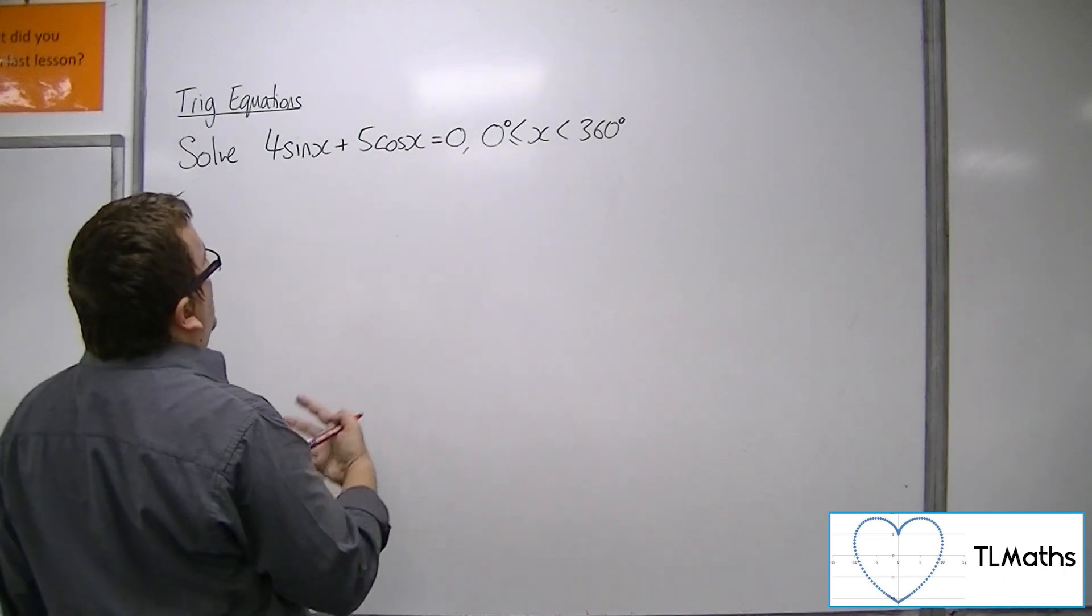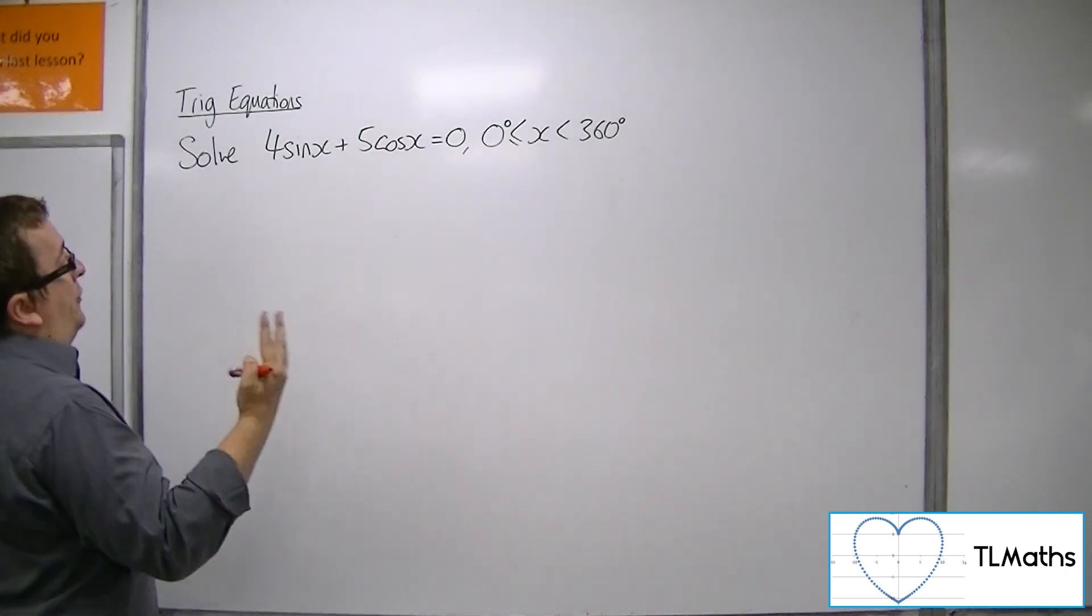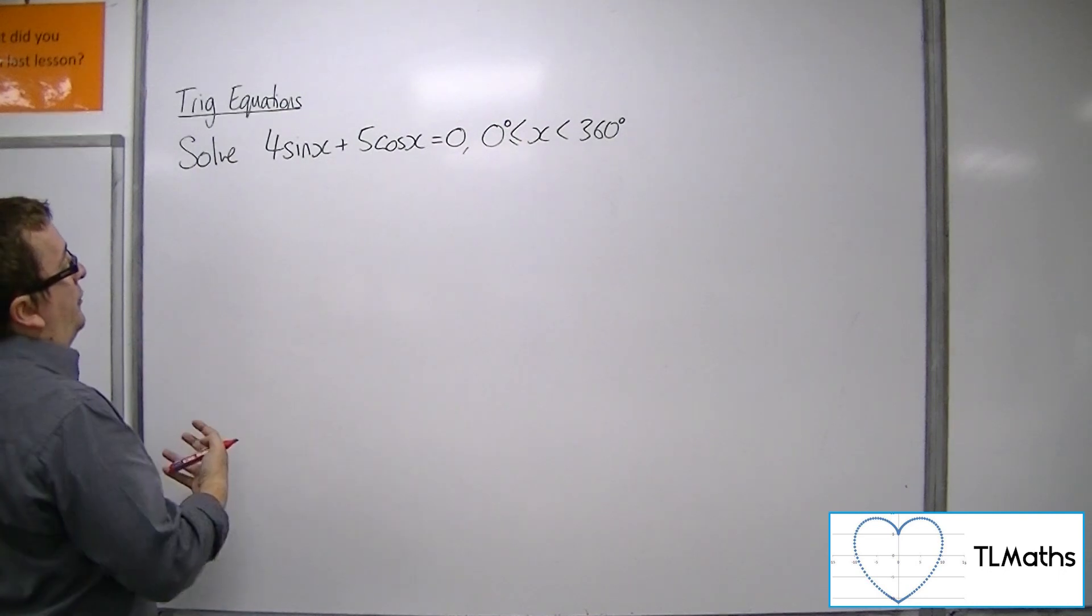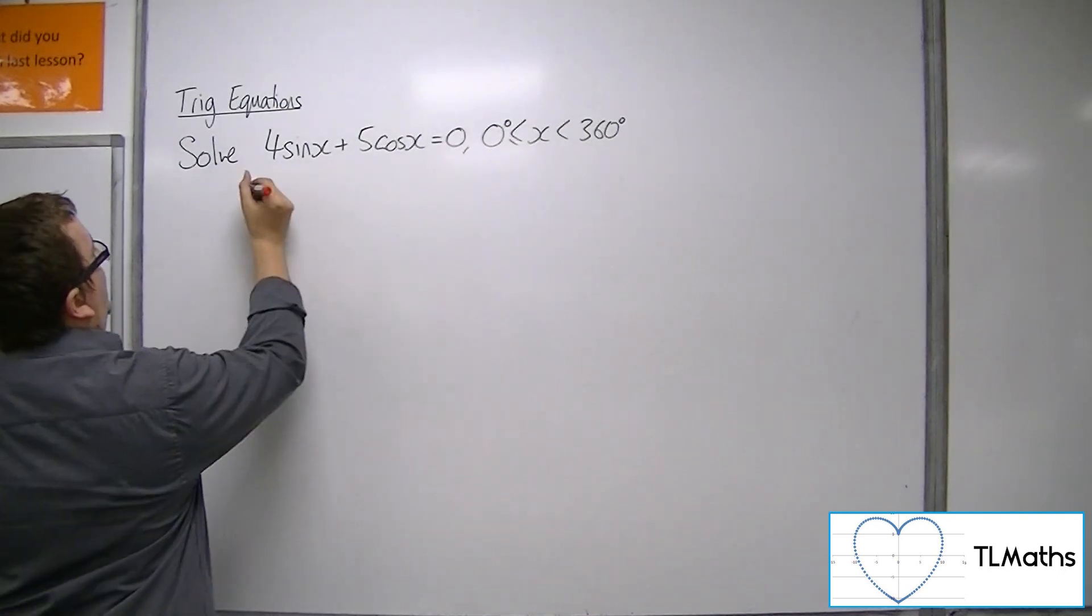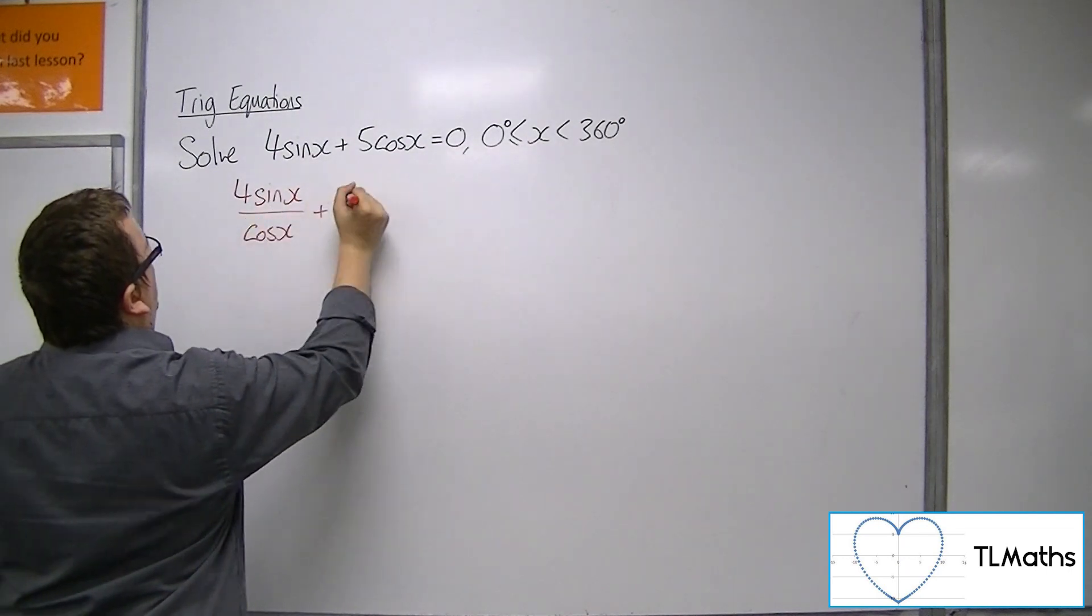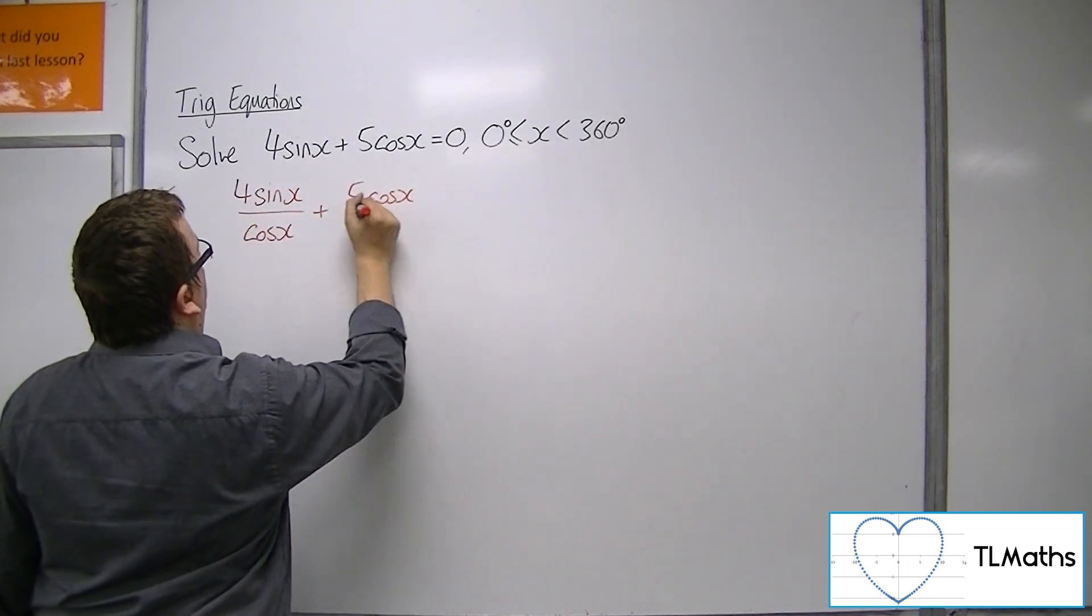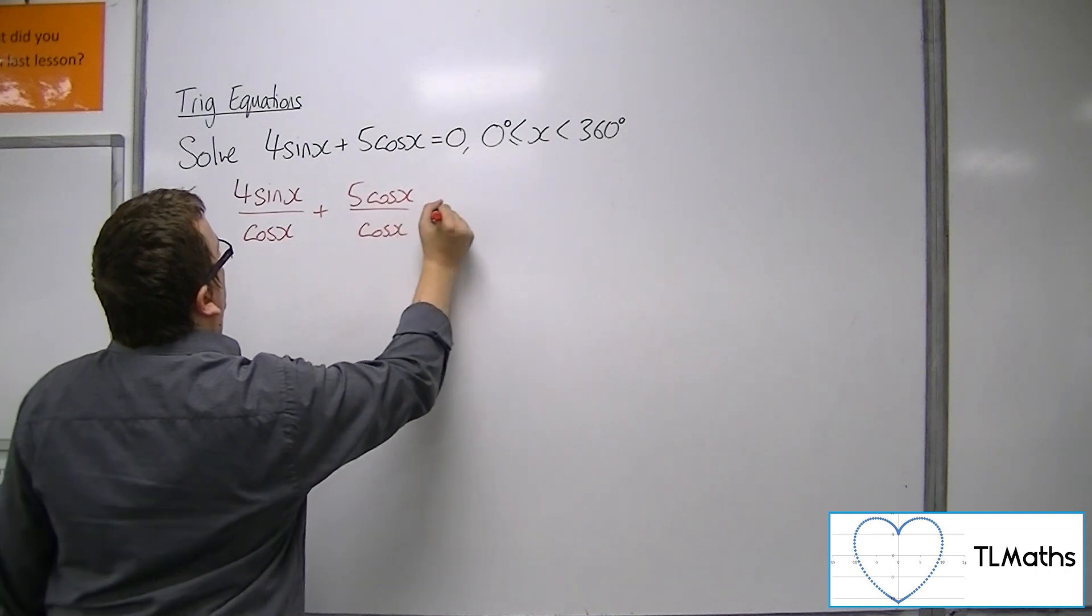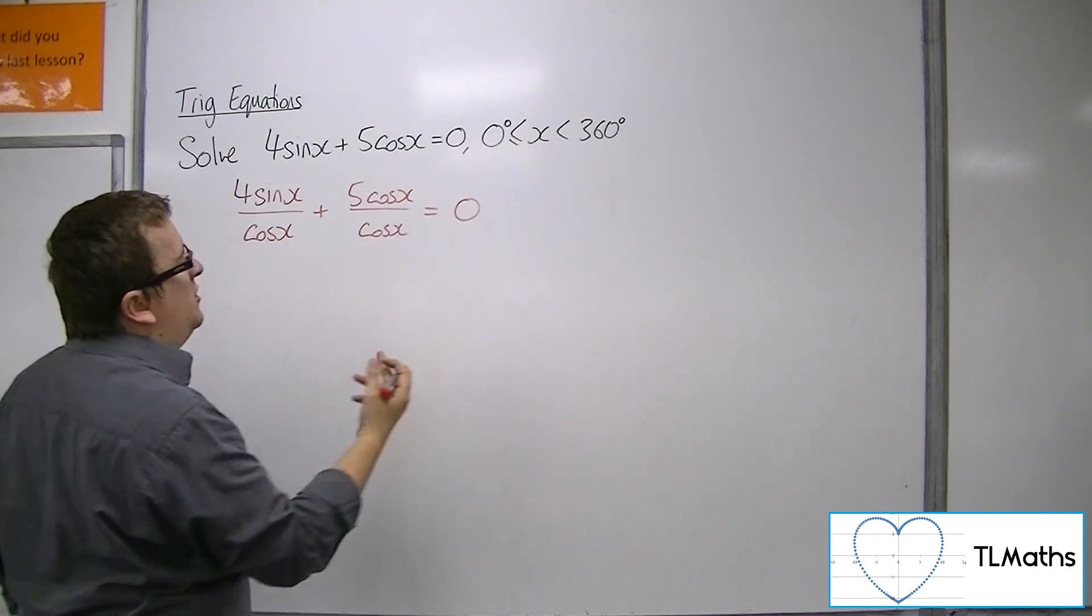So what you can do is you can divide both sides of the equation by cosine of x. So we get 4 sine x over cos x plus 5 cos x over cos x equals 0 over cos x, which is just 0.